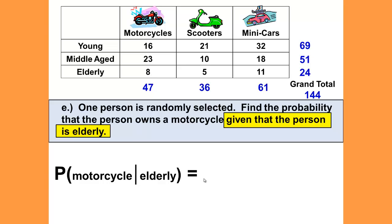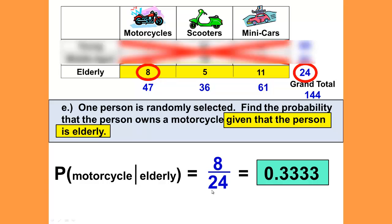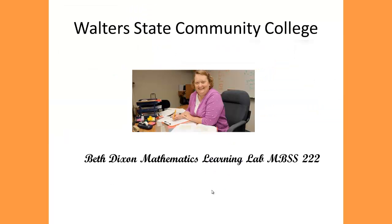And I literally, when I'm doing this problem, cover up the other rows. So we're only looking at the elderly. And we want to find out the motorcycles from the elderly. So how many motorcycles do we have? Eight out of the 24 elderly—we're no longer looking at the grand total—so that would be 8 out of 24, or a probability of 0.3333.